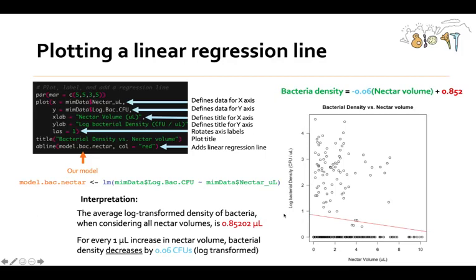And the interpretation, remember, is the average log transform density of bacteria when considering all nectar volumes is 0.85202. Okay, that's exactly right on our plot. And for every one microliter increase in nectar volume, it looks like bacterial density decreases by 0.06 CFUs after being log transformed. And that seems about right. However, one thing you might be wondering when you actually look at the data and plot it is, what are we doing about all of these zeros?